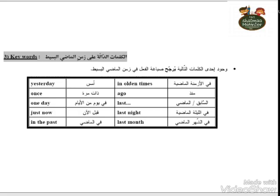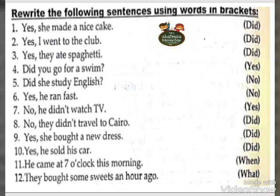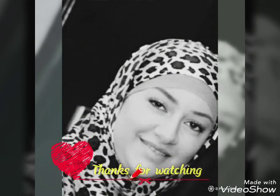يريد نبقى عارفين نصرف الأفعال المضبوطة جدا عشان ما نغلطش. هنا عندي some exercises. تعالوا نحلها مع بعض. Number one: she made a nice cake - هي عاملة كيكة لطيفة جدا. عزي نسأل بـdid، ببص للفعل made. طبعا made مش هو ده الفعل الأساسي، الفعل الأساسي make وتصريفه التاني made. يبقى نقول: did she make a nice cake? والإجابة: yes, she made a nice cake.